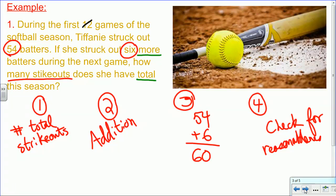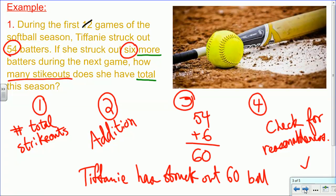And sometimes we'll do check work. Other times we're going to say check for reasonableness. And this is reasonable, so we're good. And again, finally, we have to have a sentence, so we'll say that Tiffany has struck out 60 batters.